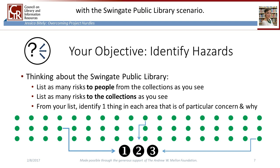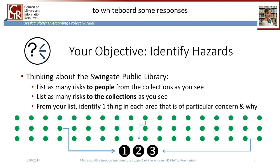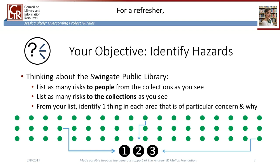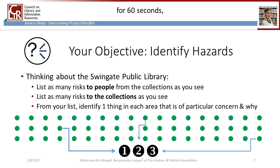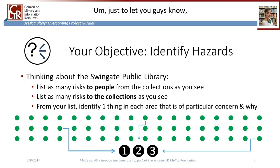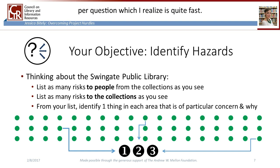To get us started in thinking about risks, let's spend some time with the Swingate Public Library scenario. We're going to move into the discussion room to whiteboard some responses to a few questions about the scenario. We will be putting the scenario on the screen for 60 seconds, but the document is also available in the Files area of the webinar screen. You're going to have about two minutes per question, which I realize is quite fast.